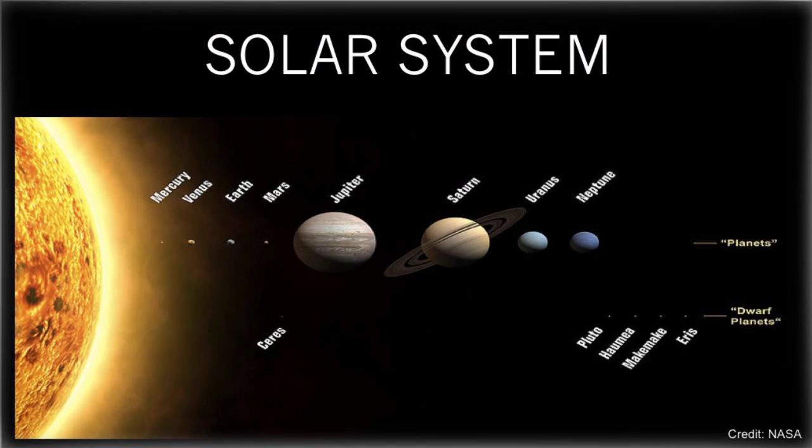Now, as we look at our solar system, one of the things that we see is that there are two classes of planets. There are the Jupiter gas giant-type planets, Jupiter, Saturn, Uranus, and Neptune. These are gaseous planets. They have no solid surface on them. They exist in the outer part of the solar system.